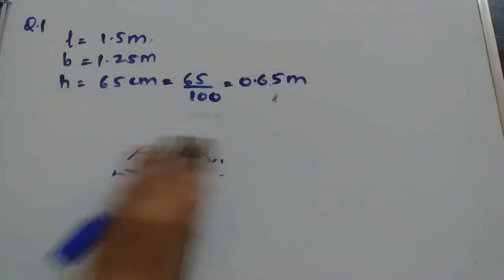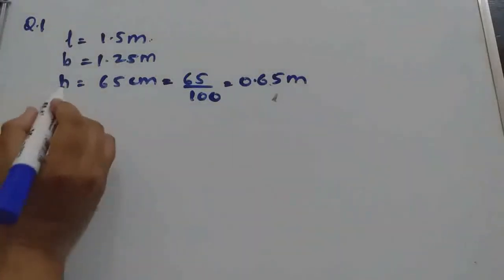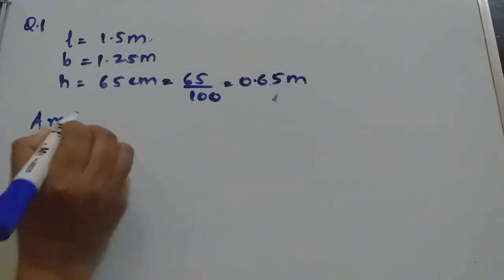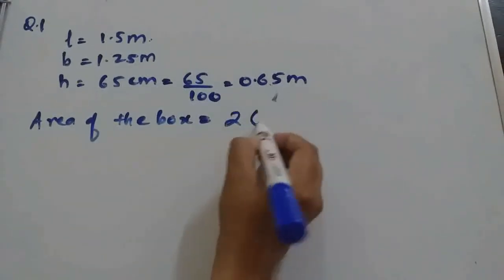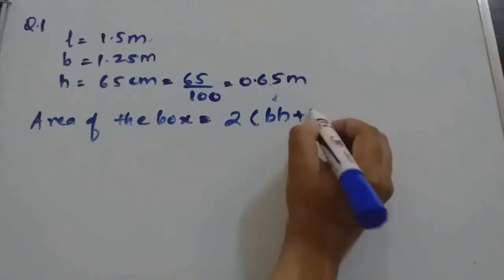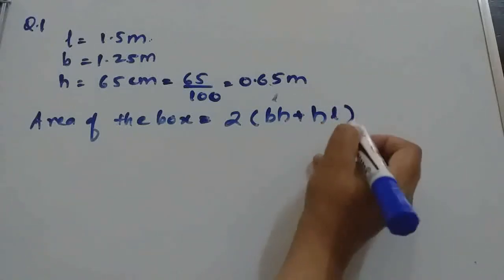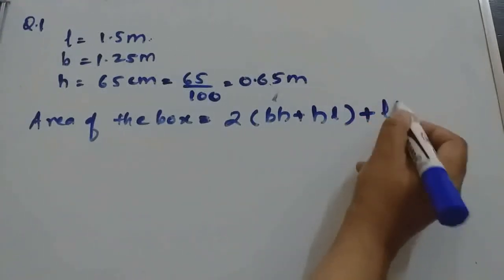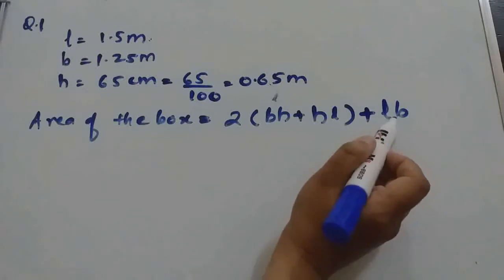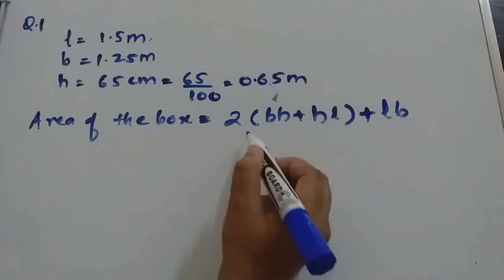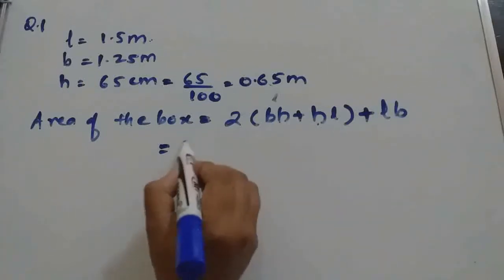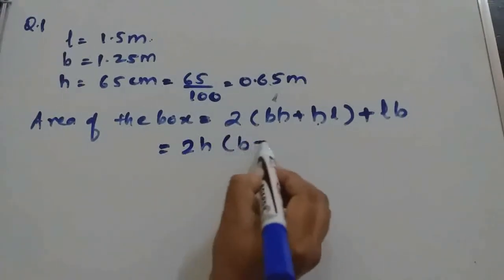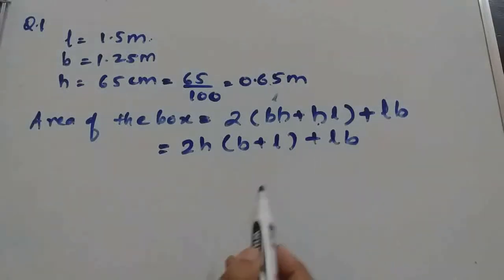So the area of the box will be 2 times the 4 walls, that is BH and HL, plus one bottom only. We should remove one top face. Now if you see, we can take H common, so 2H times B plus L, plus L into B.